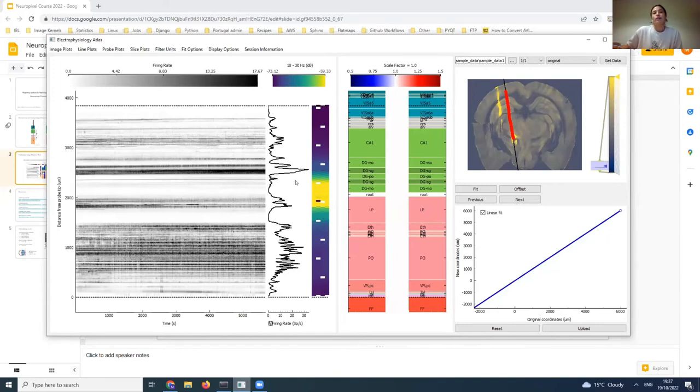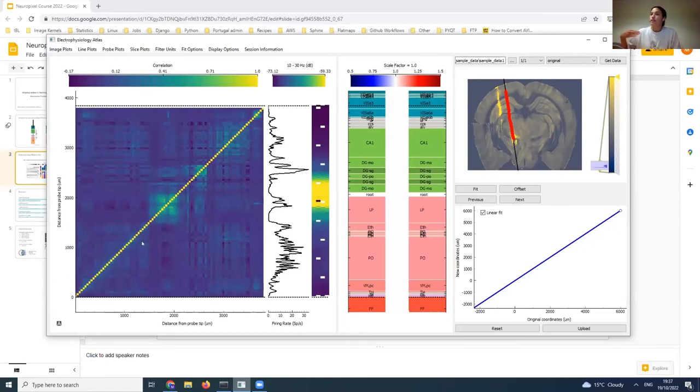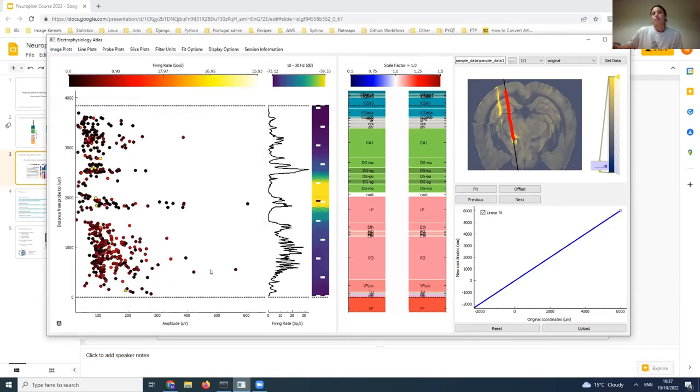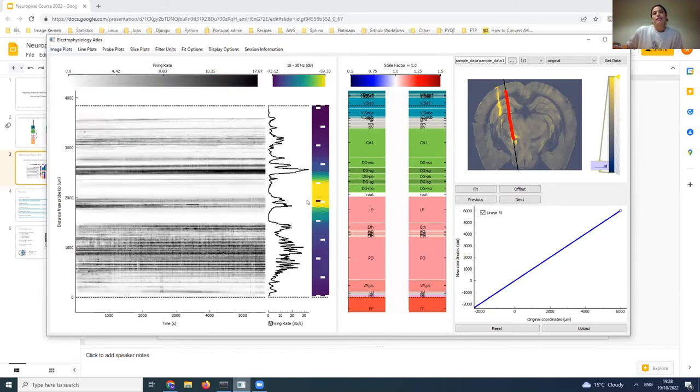In addition to these plots, there's a number of different displays that you can see, and they can all be found in these dropdown menus. For example, we can look at the cross-correlation of activity across depth, or we can look at the individual cluster plots and see where the clusters are and look at their amplitude along the x-axis and the color is their firing rate.